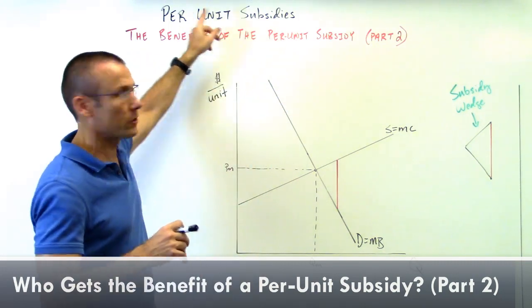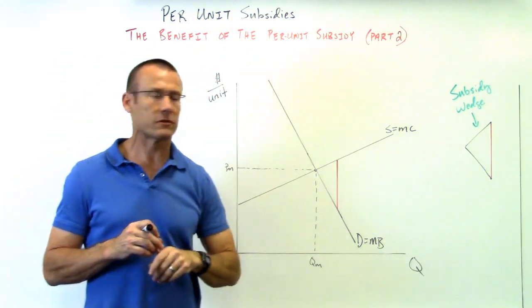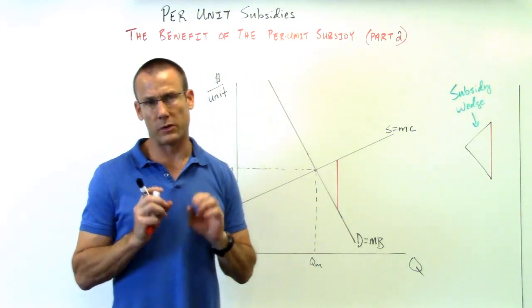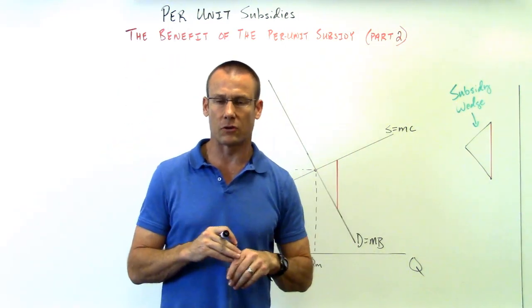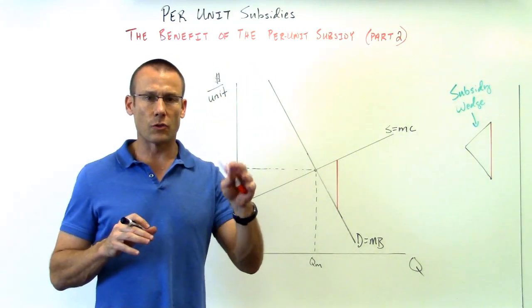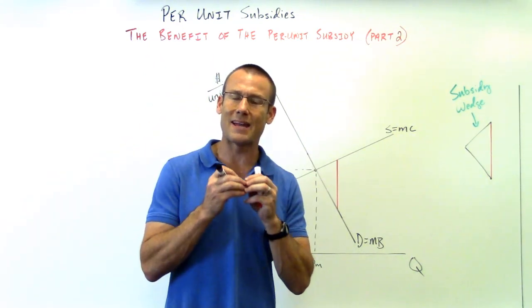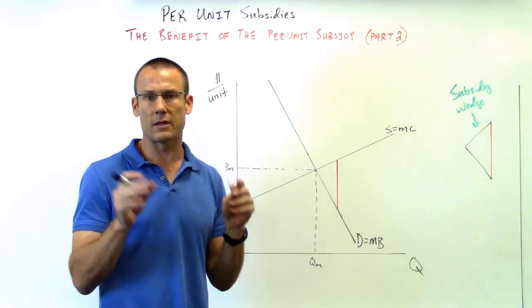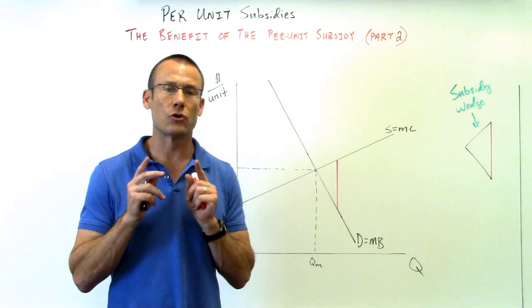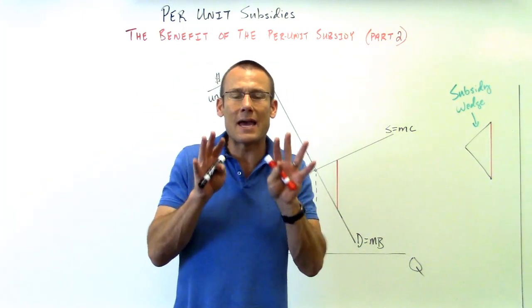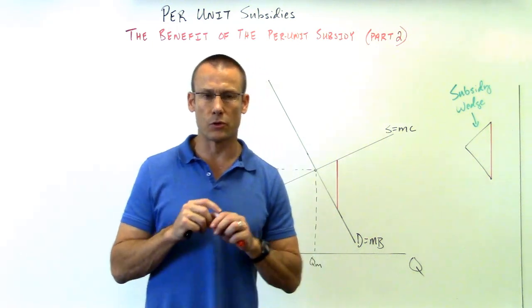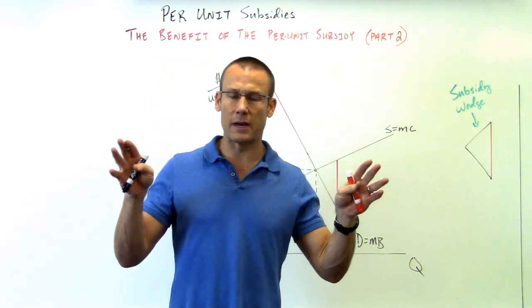Welcome back — we're still on per unit subsidies, focusing on the benefit of the per unit subsidy. This is part two; we're using the subsidy wedge. In part one, we shifted the supply curve because the government physically writes the check to the supplier. Sometimes the government cuts the check to the consumer, shifting the demand curve. But it really didn't matter which curve we shifted as far as the economic realities — how much of the benefit went to the consumer and how much went to the producer.